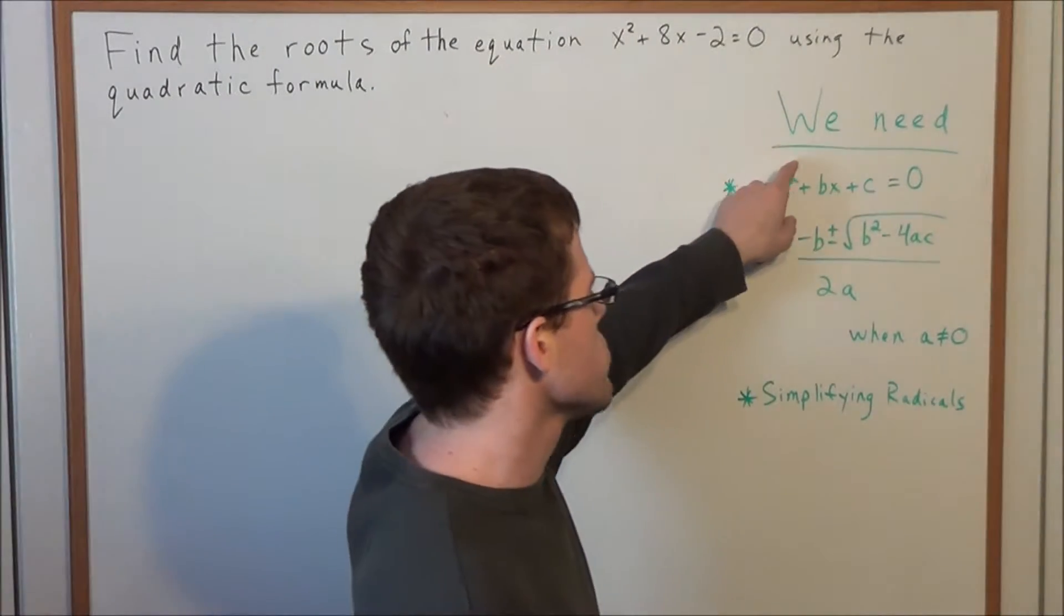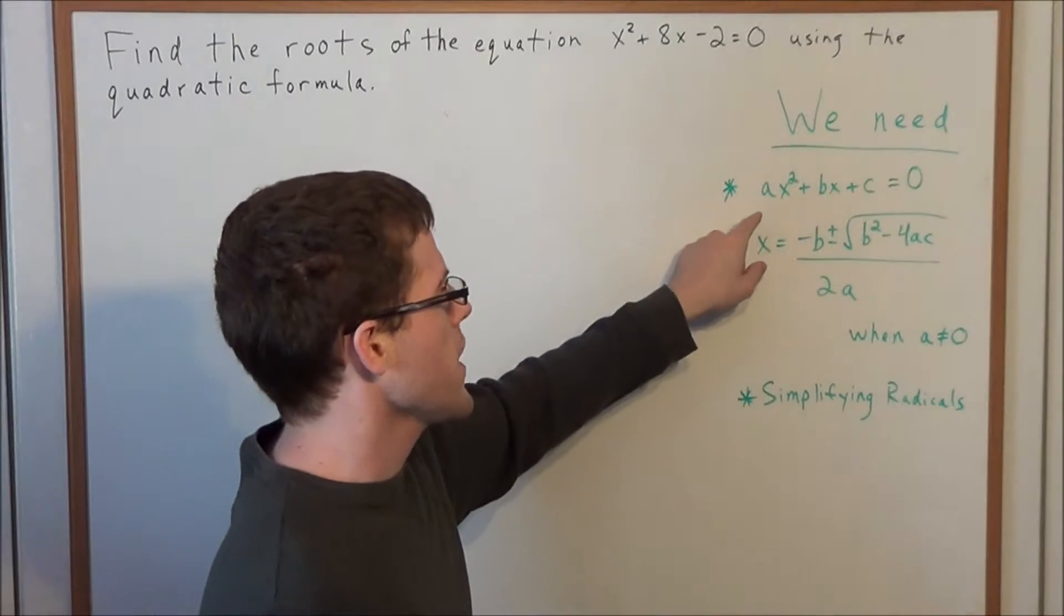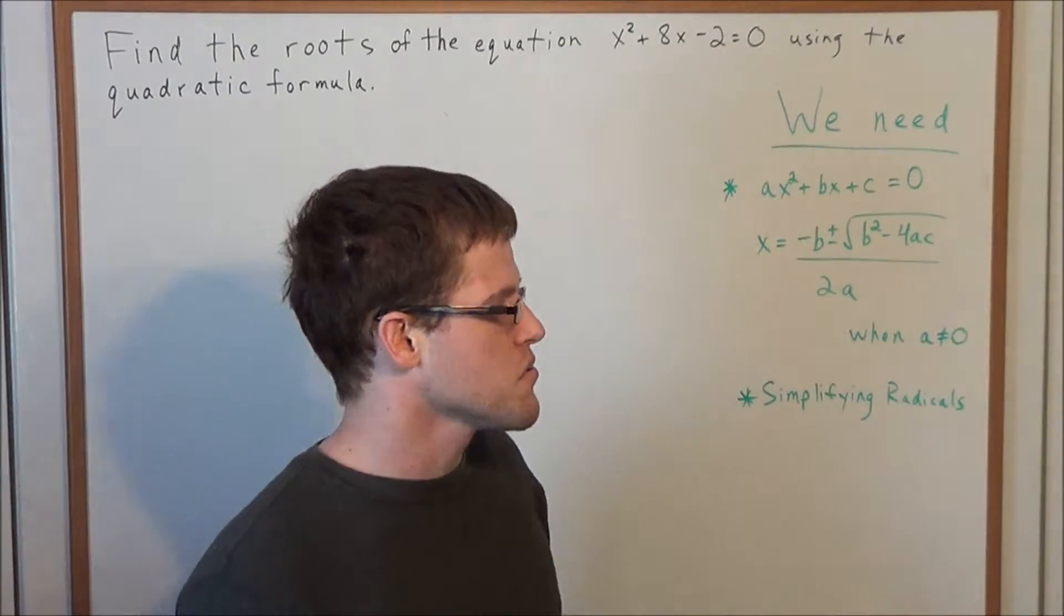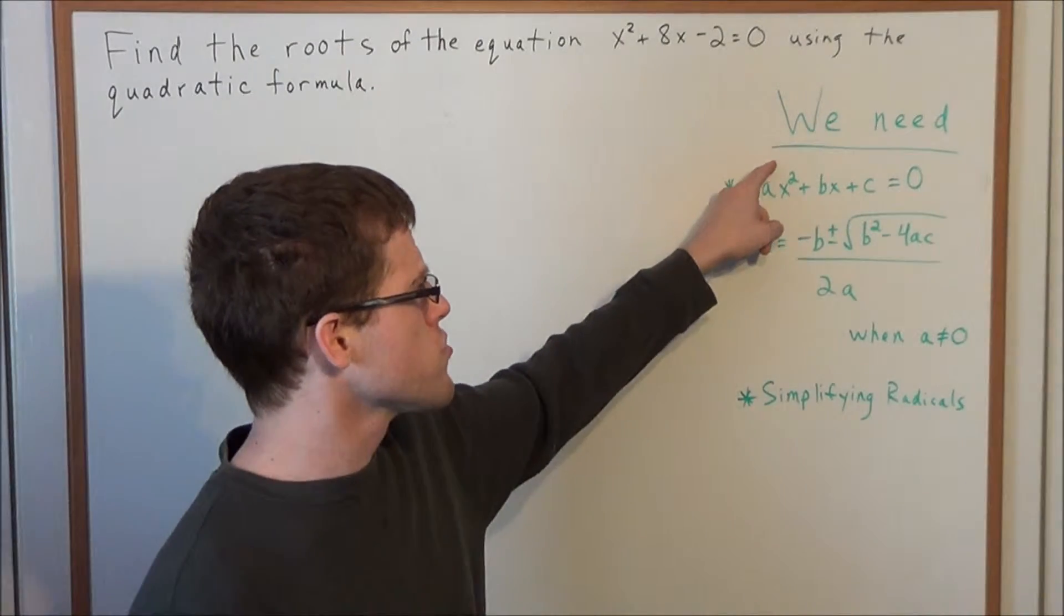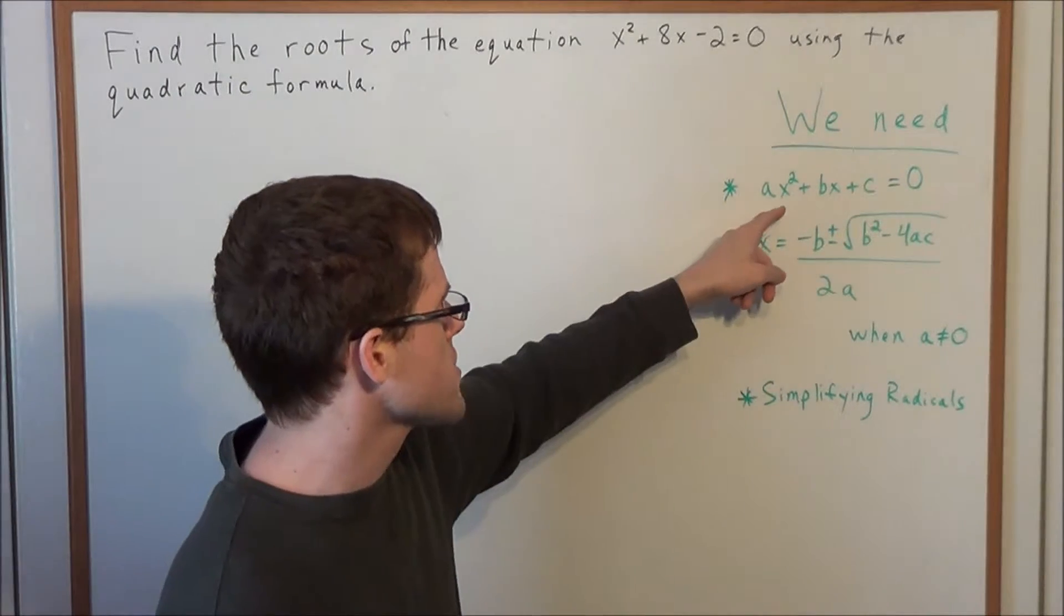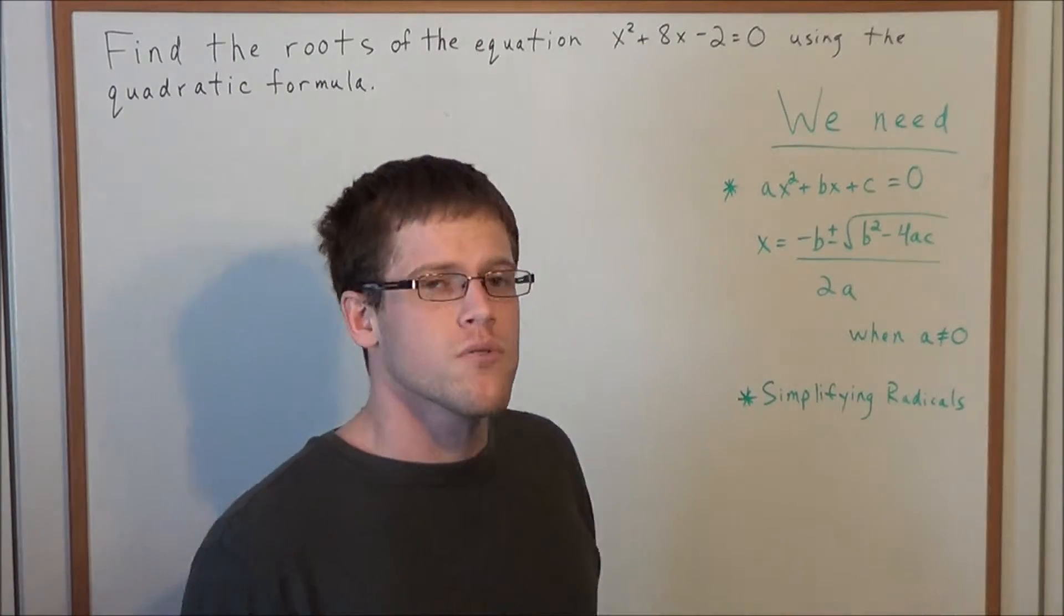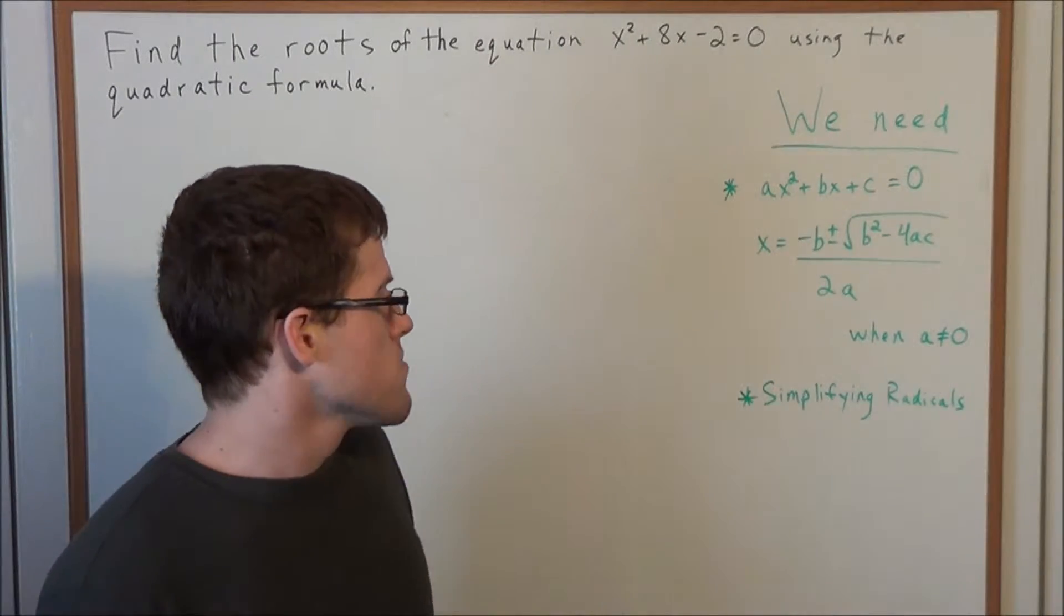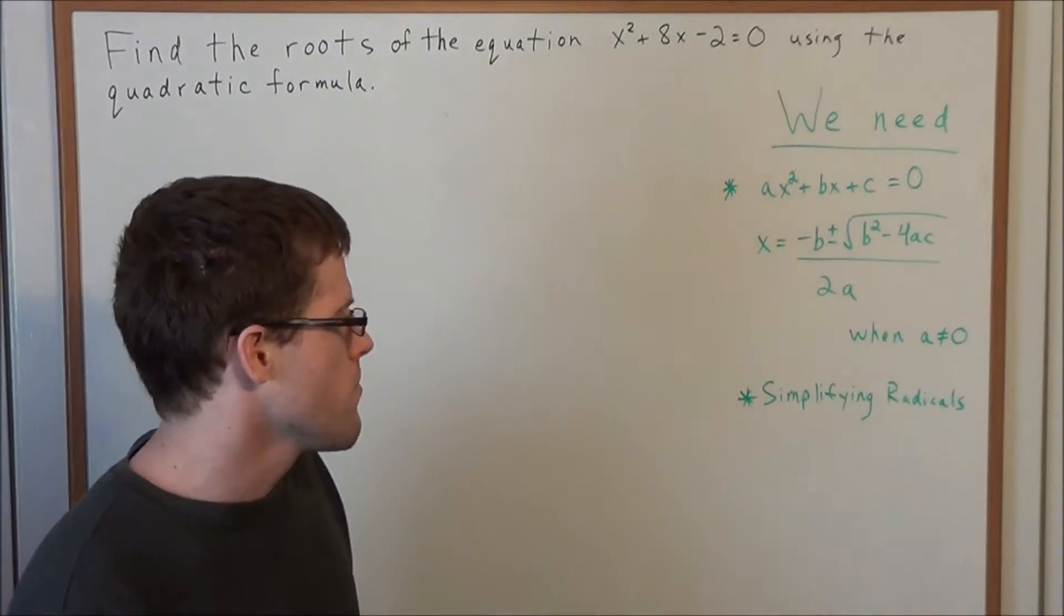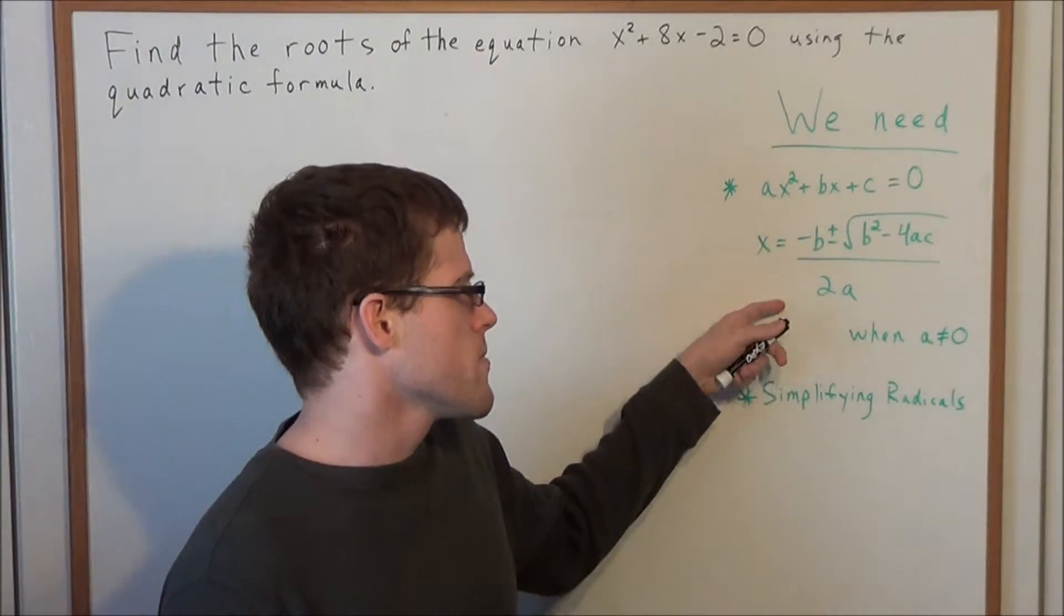So we need to look at this general quadratic equation, ax² + bx + c = 0. To find the roots or the x values that make this left hand side equal 0, we need to use the quadratic formula: x = (-b ± √(b² - 4ac)) / 2a.